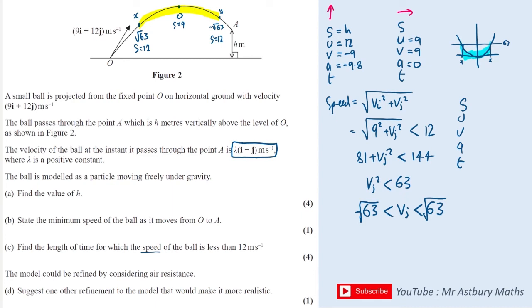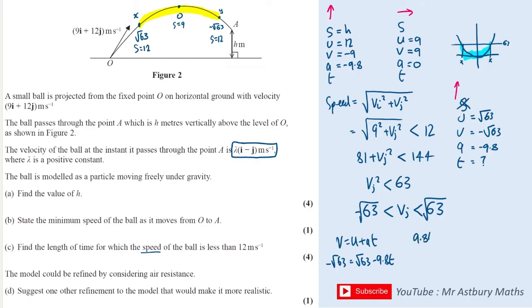Setting up SUVAT for the journey from X to Y: at the start of this interval the vertical velocity is √63, and it ends when the vertical velocity is -√63. Acceleration is -9.8 and we are looking for time T, so we use v = u + aT. This gives -√63 = √63 + (-9.8)T, so 9.8T = 2√63, therefore T = 2√63 / 9.8, which gives a value of approximately 1.6 seconds.